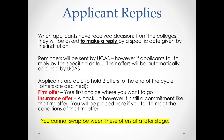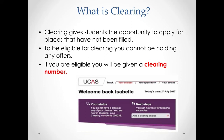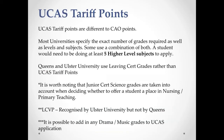Clearing gives students the opportunity to apply for places that have not yet been filled. To be eligible for clearing you can't be holding any offers, and if eligible you'll be given a clearing number. The only students that can apply to clearing are those who have not been offered anything by any of the universities they applied to — you can't change your mind and apply for a new college in clearing if you're already holding other places.